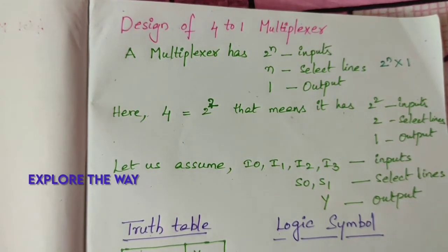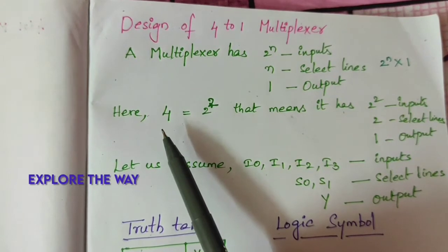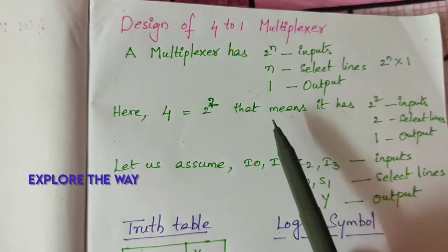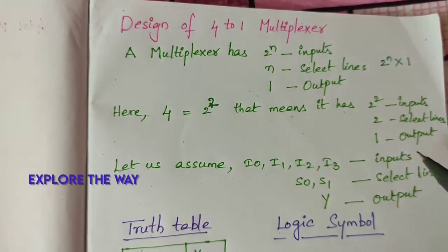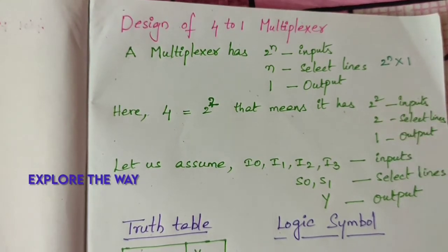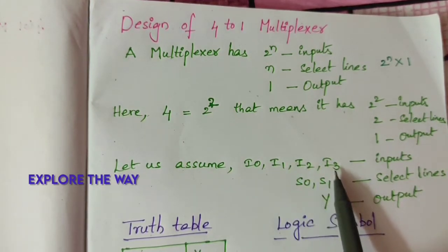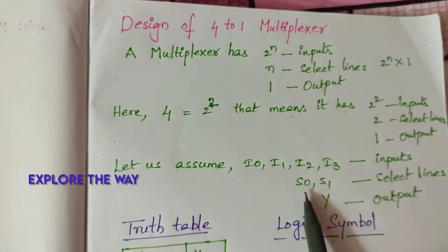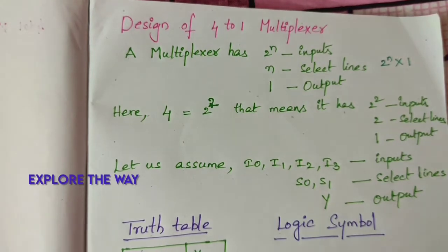I am going to design a 4-to-1 multiplexer. We can express 4 as 2 to the power of 2, which means it has 4 inputs, 2 select lines, and 1 output. For this design, let us assume I0, I1, I2, I3 as the 4 inputs, S0 and S1 as the select lines, and Y as the output.